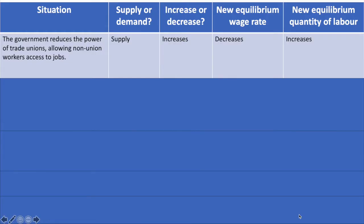In the first situation where the power of unions has been weakened, the amount of workers who can enter the profession will increase. This increases the supply of labour and causes the equilibrium wage rate to fall and the equilibrium quantity of labour to rise.